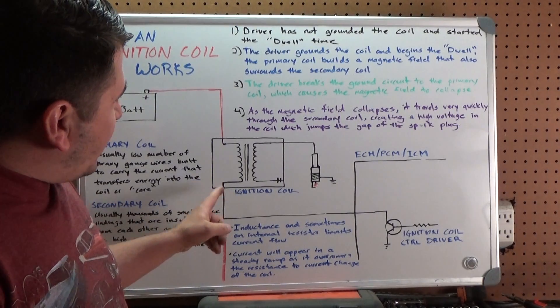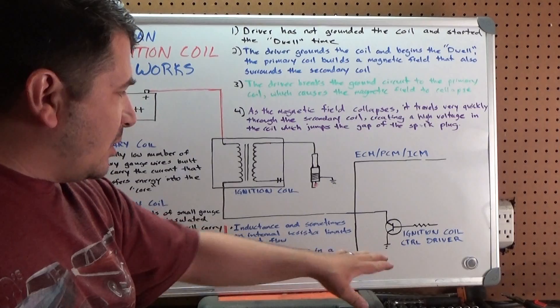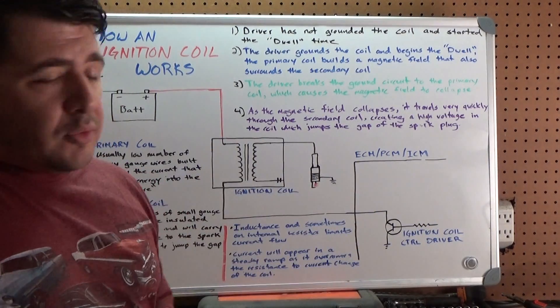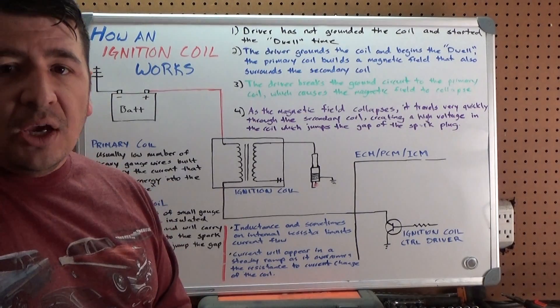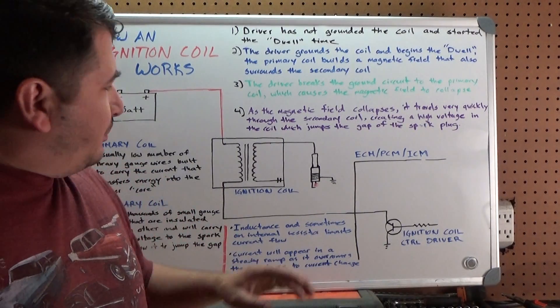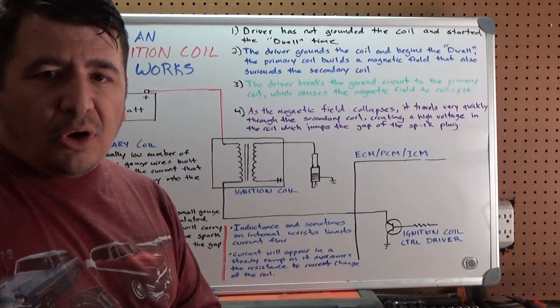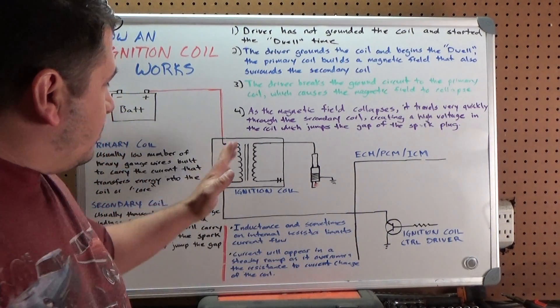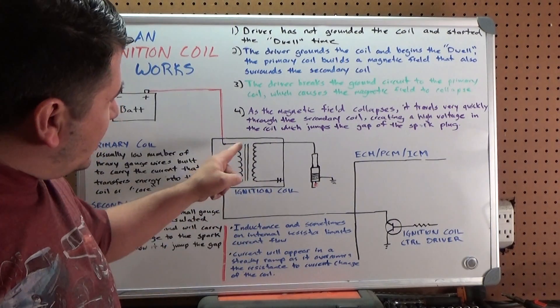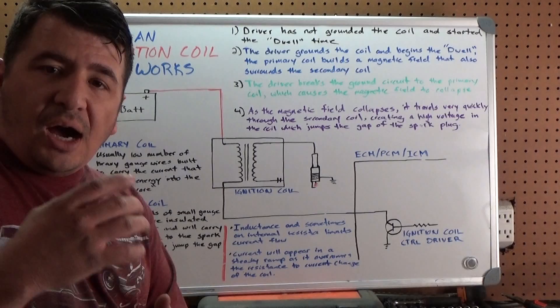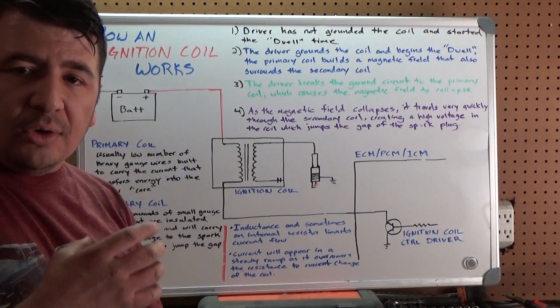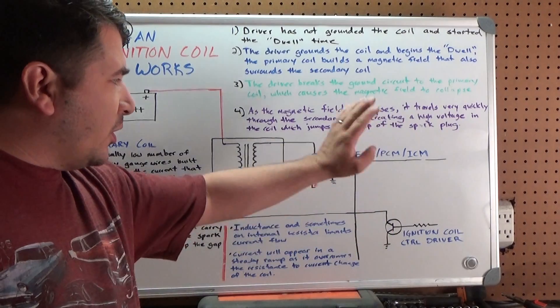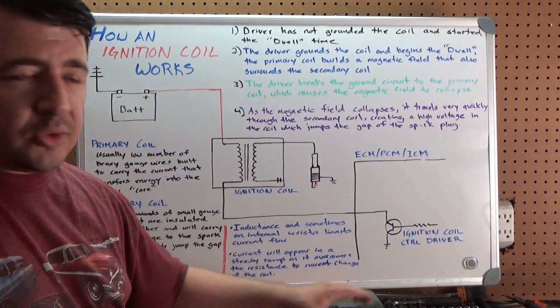When we come to the other side of the primary coil, we have our ECM, ICM, whatever's controlling it. There's going to be an ignition coil control driver. All a driver is is an on-off switch. It's what the computer uses to turn the circuit on and turn it off. In this instance, the way we've got it drawn and the way a lot of them are controlled, it's going to turn on and turn off the ground path for the coil. These two lines in here typically represent the iron core that's placed inside the secondary coil inside the ignition coil.